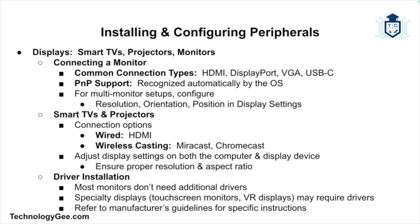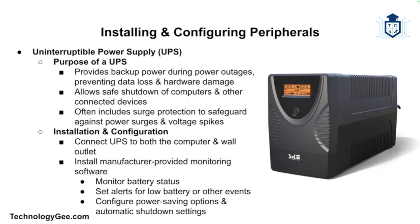Monitors usually connect via HDMI, DisplayPort, VGA, or USB-C, and most displays are plug-and-play and will be recognized automatically by the operating system. For multi-monitor setups, go to the display settings to configure resolution, orientation, and position. Smart TVs and projectors often require a wired connection such as an HDMI cable, or wireless casting such as Miracast or Chromecast. Once connected, adjust the display settings on both the computer and display device to ensure proper screen resolution and aspect ratio. Specialty displays such as touchscreen monitors or VR displays might require additional drivers — always refer to the manufacturer's guidelines.